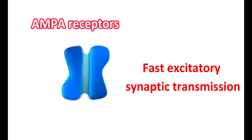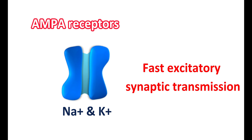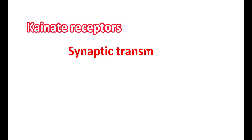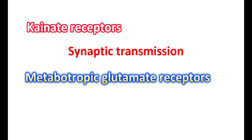AMPA receptors are responsible for fast excitatory synaptic transmission, but their activation is short-term; they are mainly permeable to sodium and potassium ions. AMPA receptors play an important role in maintaining seizure thresholds and are expressed on both astrocytes and neurons. NMDA receptors coexist with AMPA receptors and are mainly involved in long-term potentiation. Kainate receptors are involved in synaptic transmission, though their role in the CNS is not completely understood.